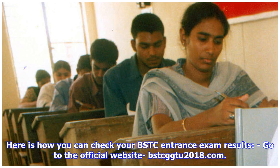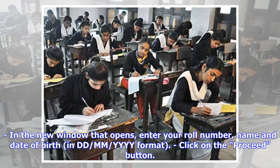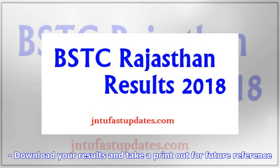Here is how you can check your BSTC entrance exam results: go to the official website big22018.com. Under the 'for candidates' tab, click on the BSTC results link. In the new window that opens, enter your roll number, name, and date of birth in DD-MM-YYYY format, then click on the 'proceed' button. Download your results and take a printout for future reference.